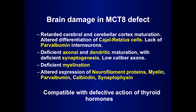So in the MCT8 defect, we see features of brain damage that resemble in many respects the alterations seen in rodents as a consequence of thyroid hormone deficiency — very altered differentiation of Cajal-Retzius cells, lack of parvalbumin interneurons, deficient axonal and dendritic maturation, deficient synaptogenesis, deficient myelination, and also altered expression of genes under thyroid hormone control such as neurofilament, myelin, parvalbumin, calbindin, synaptophysin, and others. All this is compatible with defective action of thyroid hormones, indicating that the lesion MCT8 mutation leaves in the brain is due to absent thyroid hormone action and not to another unrelated function of the MCT8 transporter.